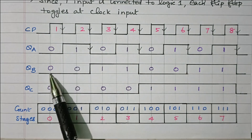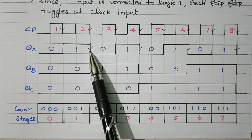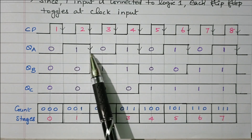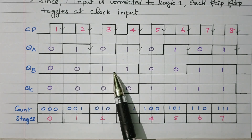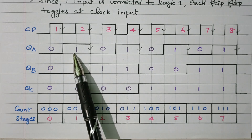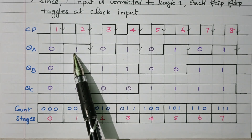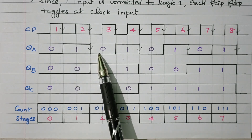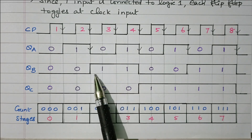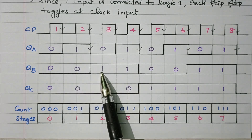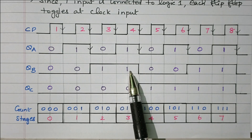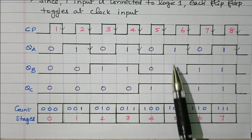For the second flip-flop QB: when QA is 0, after inversion 1 is applied, causing a toggle — QB changes from 0 to 1. When QA is 1, after inversion 0 is applied, so no change. When QA goes from 1 back to 0, QB changes from 1 to 0. So QB toggles whenever QA transitions from high to low.